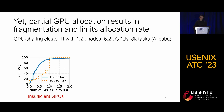Unfortunately, GPU sharing is not a silver bullet. We analyzed a GPU sharing cluster with over 1,000 nodes and 6,000 GPUs hosting over 8,000 tasks at Alibaba. As shown in the left figure, the solid blue line depicts the CDF of idle GPUs per node, while the dotted orange line represents GPU requests per task. Over 90% of nodes have fewer than one available GPU, unable to meet the demand of around 50% of tasks requiring one or more GPUs, indicating the insufficiency of GPUs.